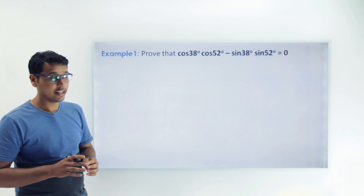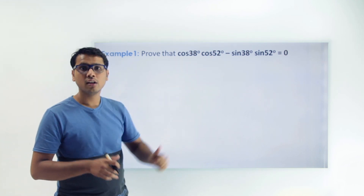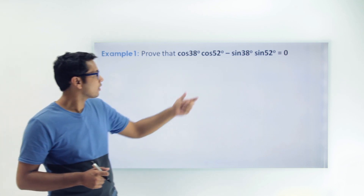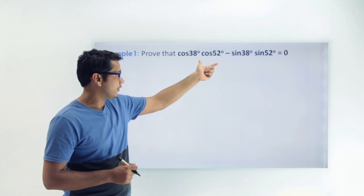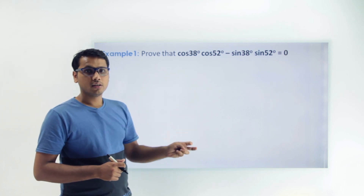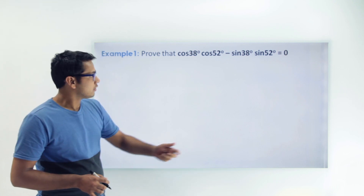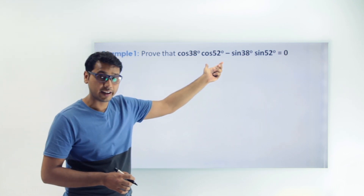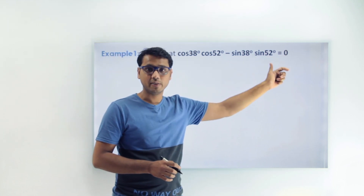But if you look closely, 38 and 52 are complementary to each other. That means this trigonometric function cos(38) × cos(52) can be converted to their complementary trigonometric function. We can write 52 in its complementary angle form.